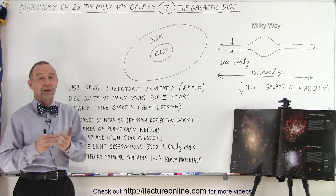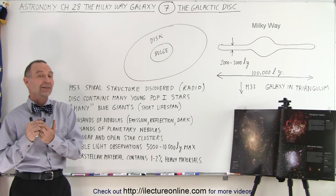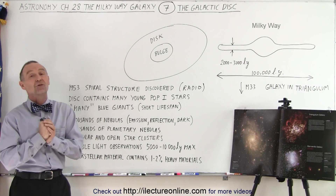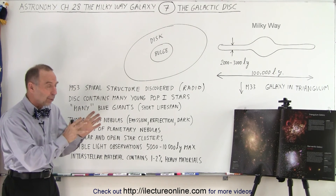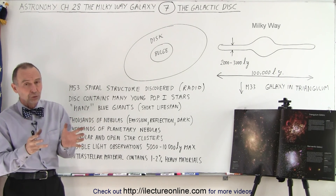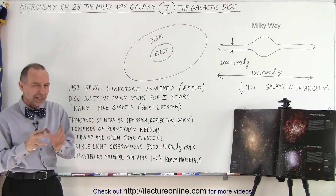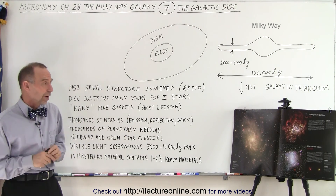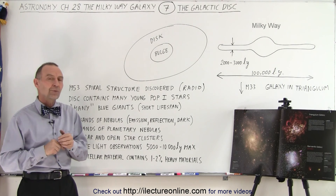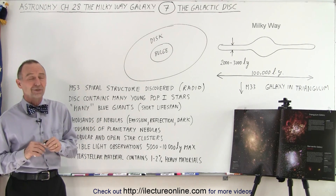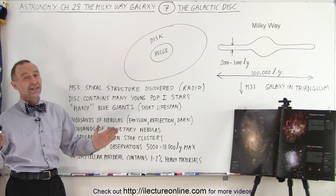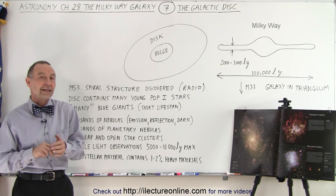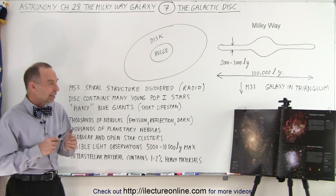In our own local group of galaxies, there are three spiral galaxies: our Milky Way galaxy, the Andromeda galaxy, and the galaxy in Triangulum, M33. M33 is a little bit smaller than the other two — the Andromeda and Milky Way are about the same size, about 100,000 light years across, while M33 is only about 60,000 light years across, which is still enormous. But it looks a lot like the Milky Way galaxy.